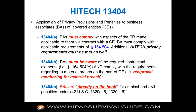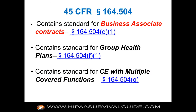The HITECH Act introduced the requirement that BAs had to comply with the privacy rule, that they had to be aware of what was in the contract, and that they were directly on the hook. Business associate contracts have been in the privacy rule forever. The only thing different under the omnibus rule is that now a business associate has to have a contract with a subcontractor that it shares PHI with.